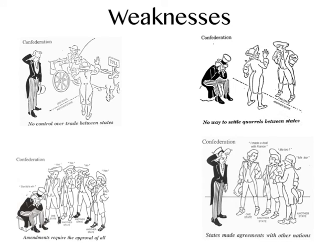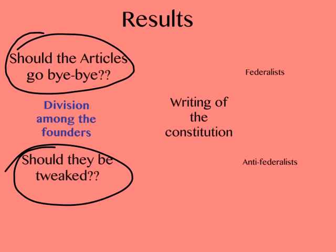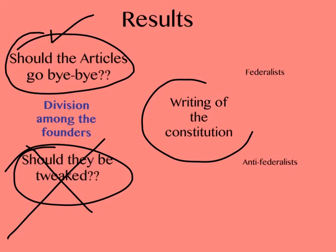With all those weaknesses, the question facing the founders was: should we scrap the Articles or should they be tweaked? There was definitely a lot of division among the founders. After much back and forth, debate, argument, and a bit of a throwdown in Philadelphia, they finally decided — no, we're not tweaking them. We need them to go bye-bye. So at that point they started writing the Constitution.